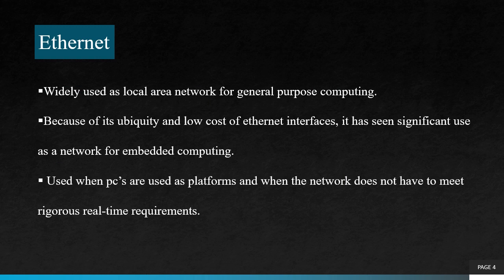Let us compare the I2C bus and Ethernet. Ethernet is widely used as a local area network for general purpose computing. Because of its ubiquity, i.e. it is available in a simple manner, and the low cost of Ethernet interfaces, it has seen significant use as a network for embedded computing. In most embedded applications Ethernet is used — specifically in applications when PCs are used as platforms and when the network does not have to meet any rigorous real-time requirements.